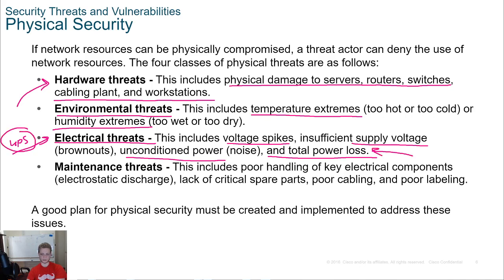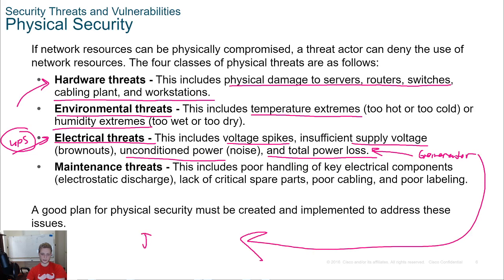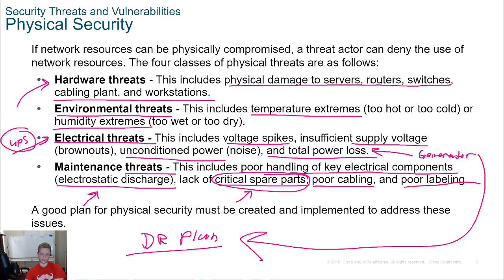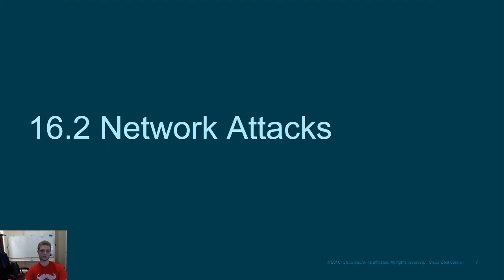For extended total power loss, you can use a generator. This brings us back to the DR plan — what happens if we lose power? Do we have a generator? Should we buy one? Those are questions you should ask. Maintenance threats are another concern: poor handling of key components, discharge of static electricity, a lack of critical spare parts — having spare parts on the shelf is very important. Poor cabling and poor labeling are also issues. We need to keep track of our equipment, be familiar with it, and have good documentation. A good physical security plan is very important.